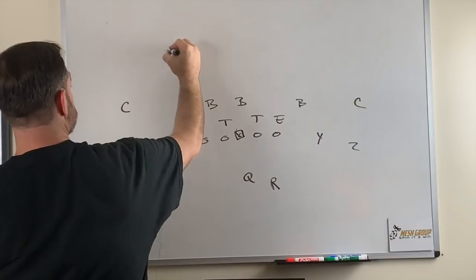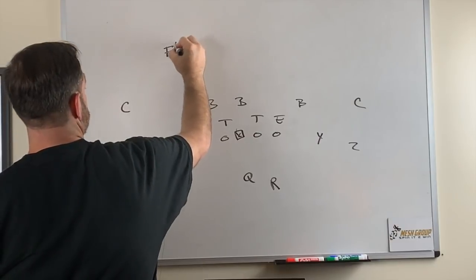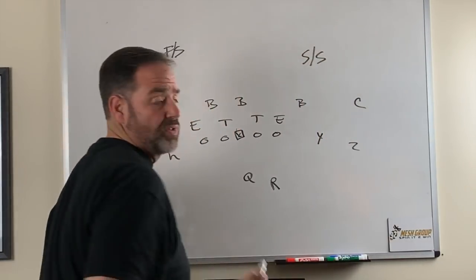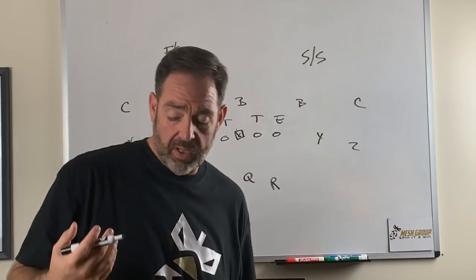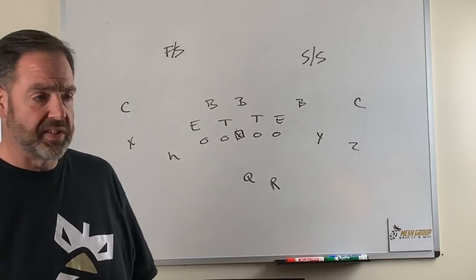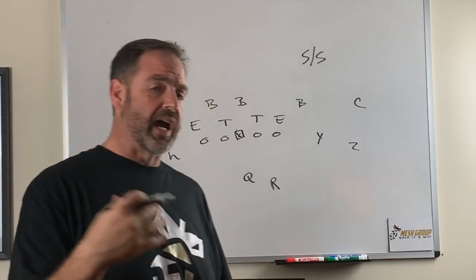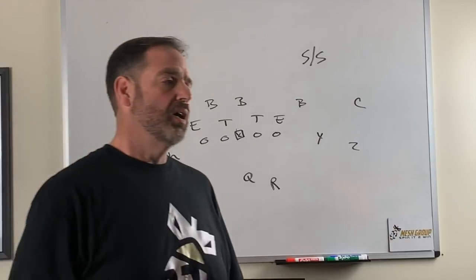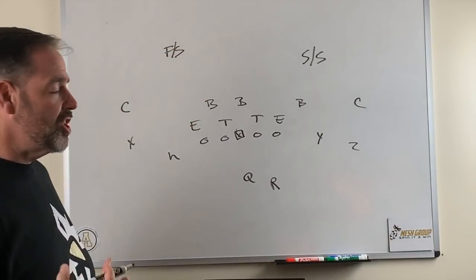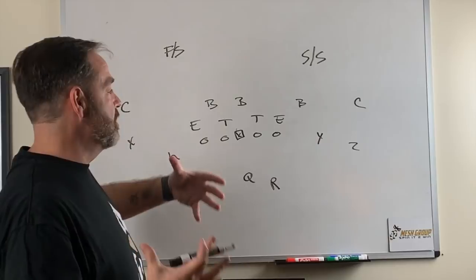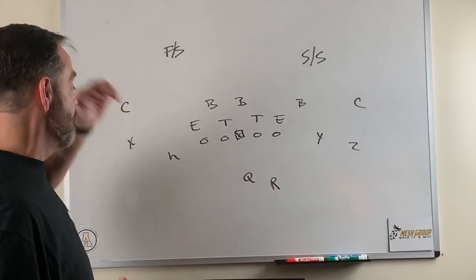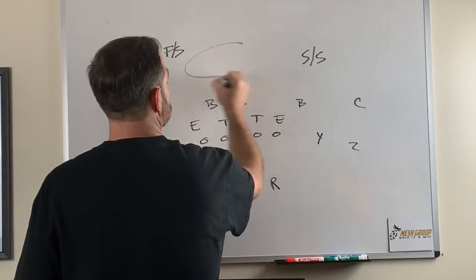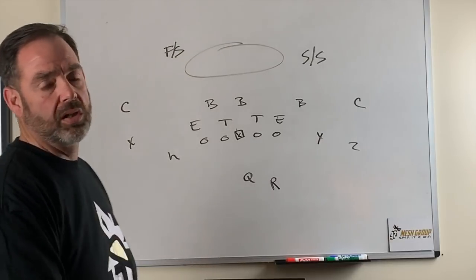You can make coverage as complicated or as simple as you'd like. So many of us call coverages different things, whether it's sky, cloud, four, six, three, two. But in general, your coverages are going to start off with one question, and that's the middle of the field — is the middle of the field open or closed?